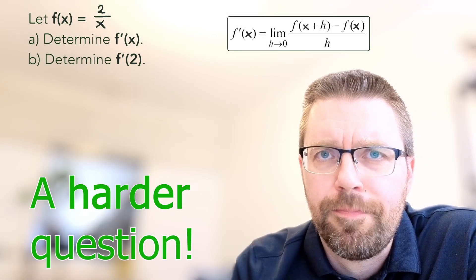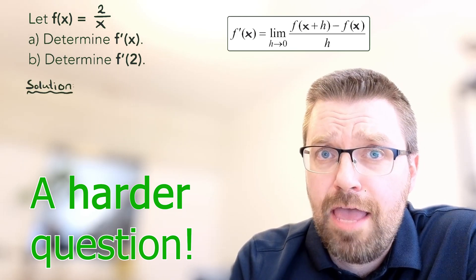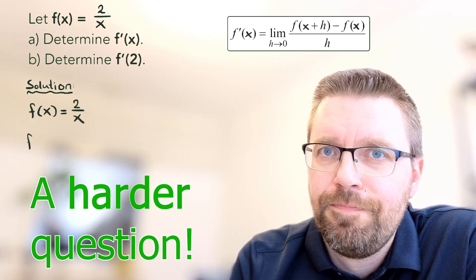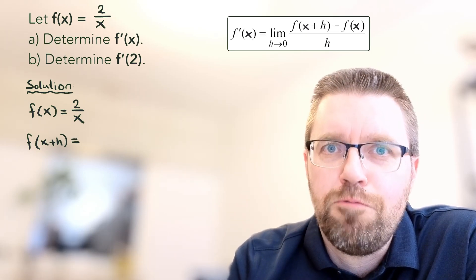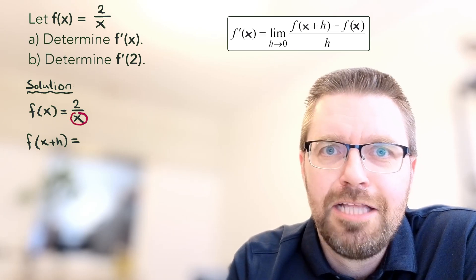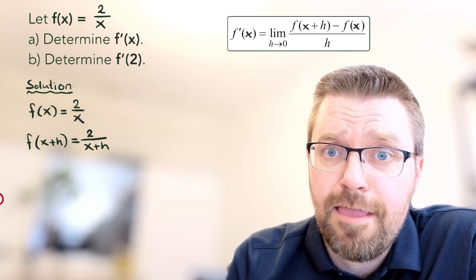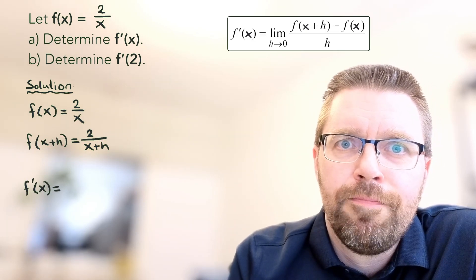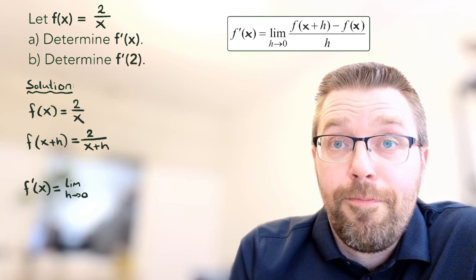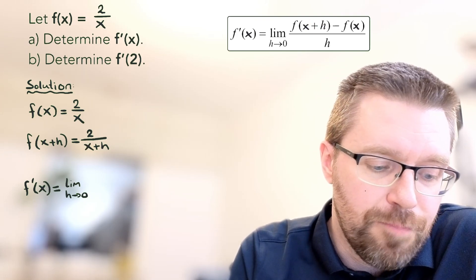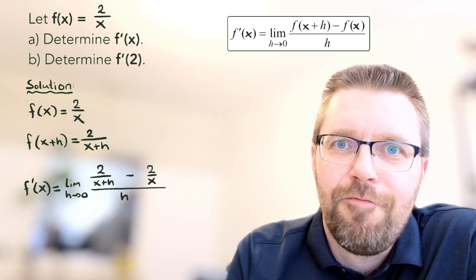Here we have a much harder question. Let f equal 2 divided by x. My steps are the same at the beginning. First I write down the function. Then I write down f of x plus h by replacing x with x plus h, giving 2 divided by x plus h. I put everything inside the definition: f prime equals the limit as h approaches 0 of 2 divided by x plus h, minus 2 divided by x, all divided by h.